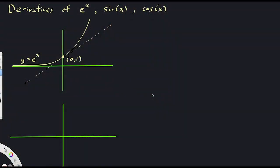We're going to start by looking at the derivatives of three common functions: e to the x, sine of x, and cosine of x. We'll start today with e to the x. I've drawn its graph here — y equals e to the x. It's an exponential growth graph. It has a landmark point at (0, 1), because e to the 0 power, like just about anything raised to the 0 power, is equal to 1.